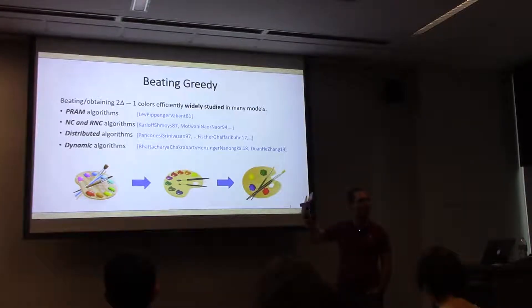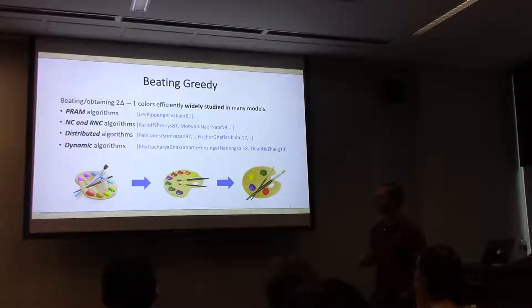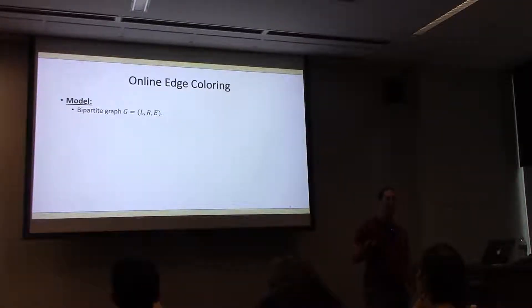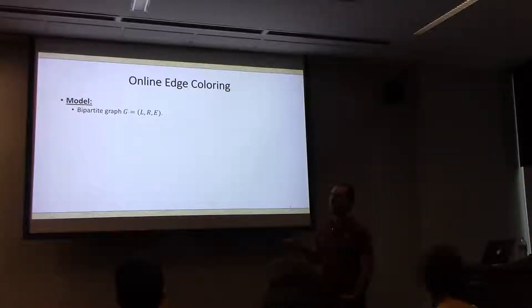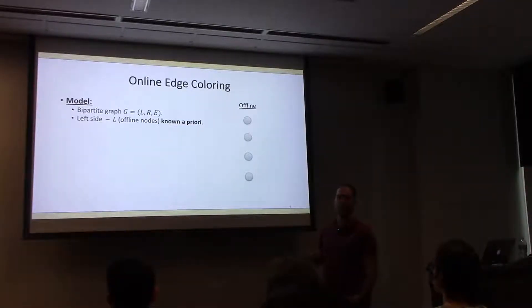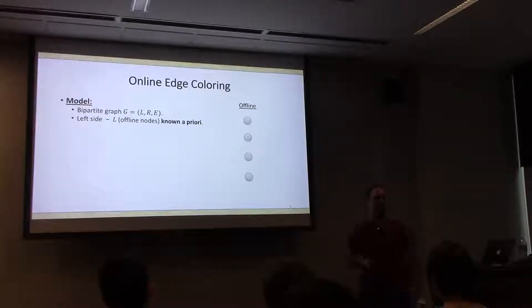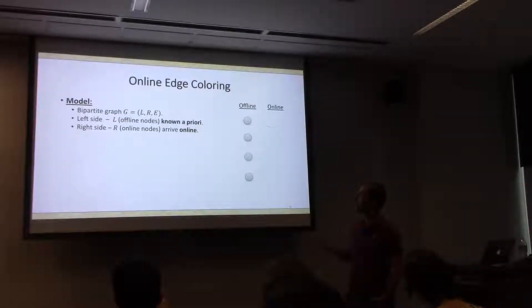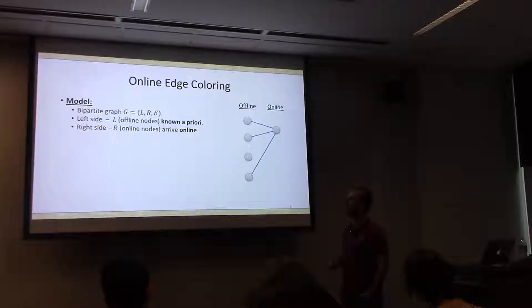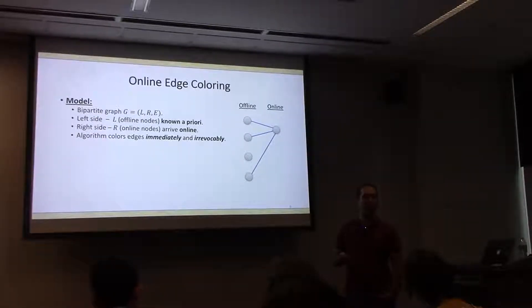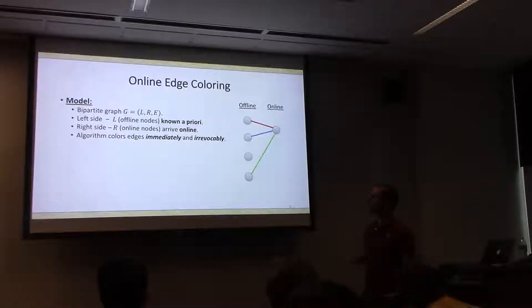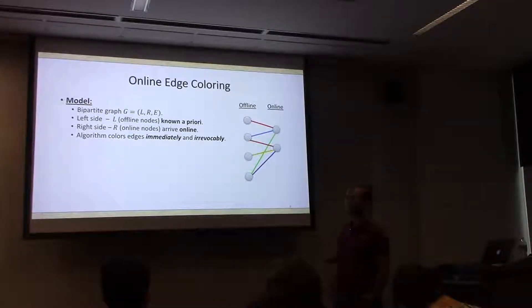This is a straw man solution, but for a lot of restricted models of computation, beating it is proven somewhat tricky. The model we'll look at today is online edge coloring, where the underlying input is a bipartite graph. One side — offline nodes — is known ahead of time. The right side — online nodes — arrive in an online fashion together with their edges. An online edge coloring algorithm must decide immediately and irrevocably what color to assign edges when each node shows up.